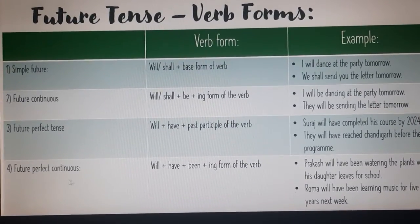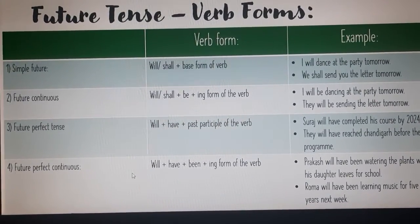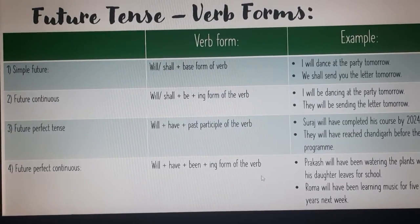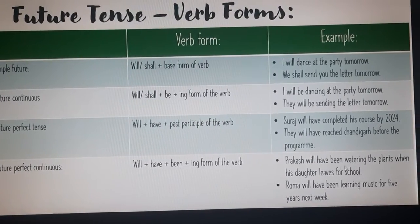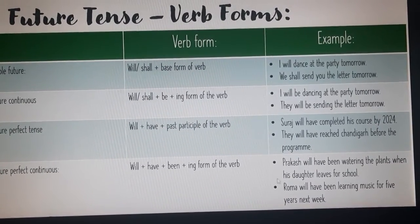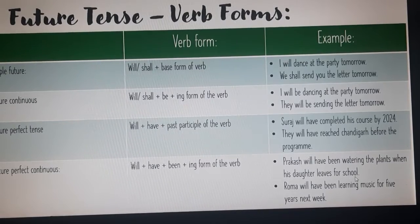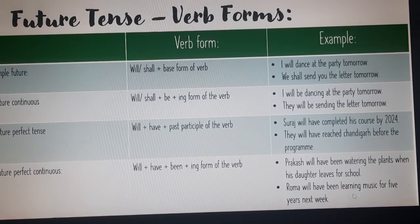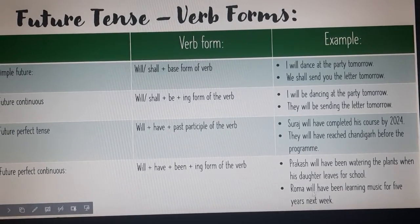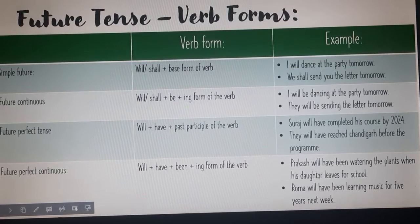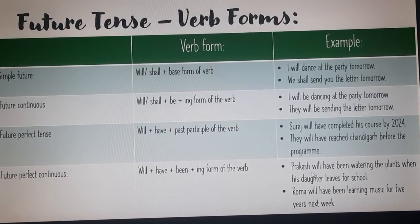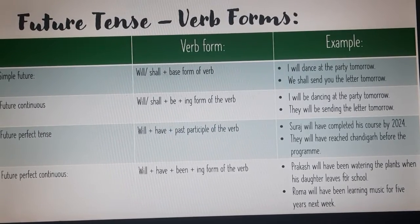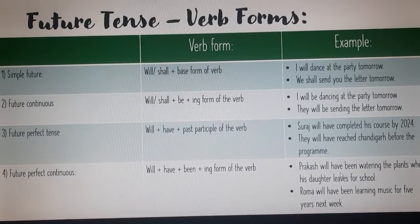The last one is future perfect continuous. For this, 'will' plus 'have' plus 'been' plus the '-ing' form of the verb is used. For example: 'Prakash will have been watering the plants when his daughter leaves for school' and 'Roma will have been learning music for five years next week.' These are examples of future perfect continuous.